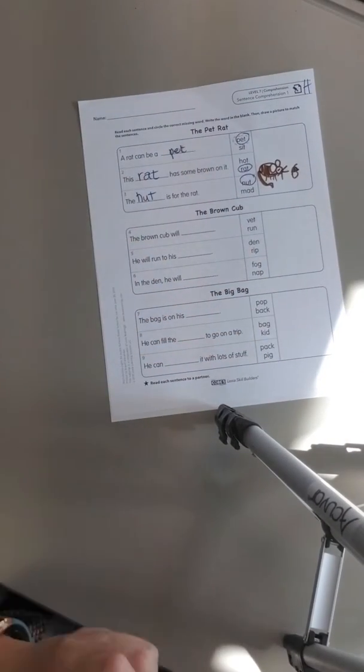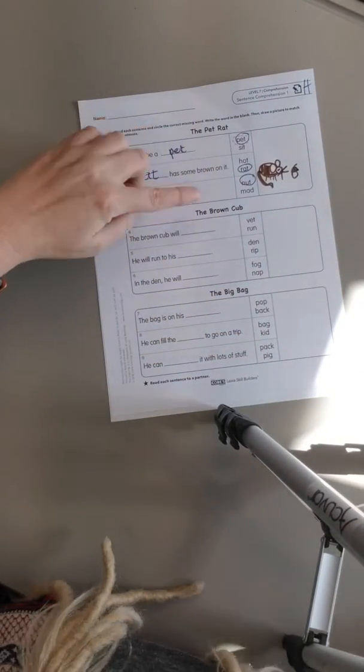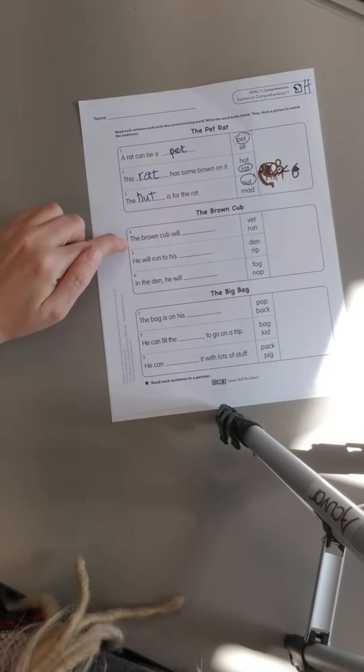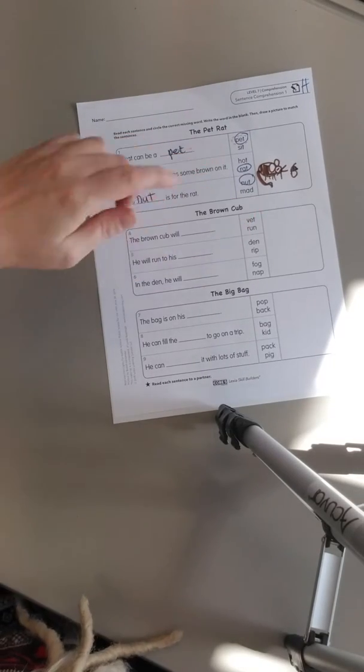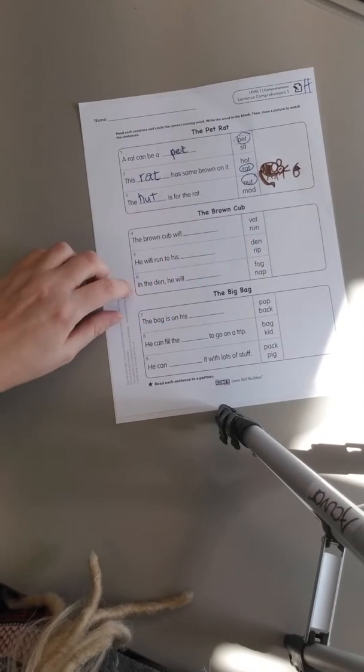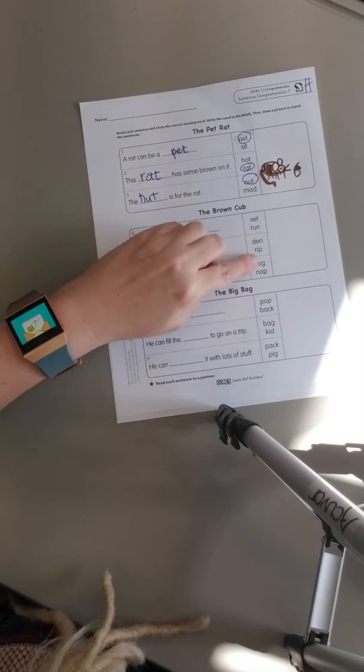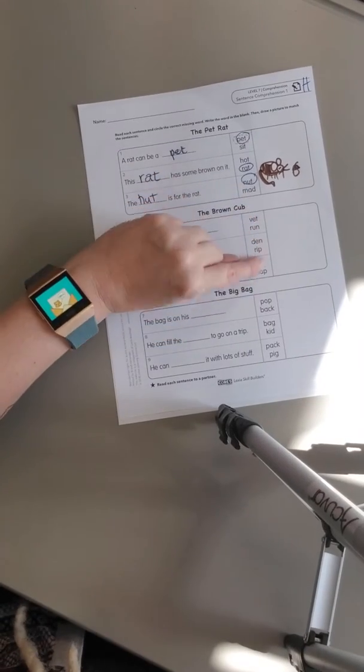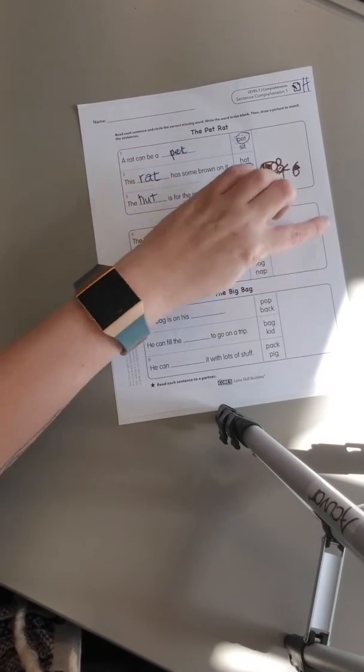So you're going to do the same thing for the rest of these. This one says the brown cub. The brown cub will blank. Vet run. He will run to his blank. Den rip. In the den, he will blank. Fog nap. So you're going to circle the right word, write it on the blank, and then draw a picture to match.